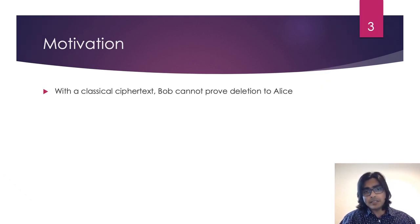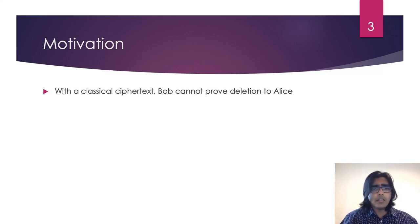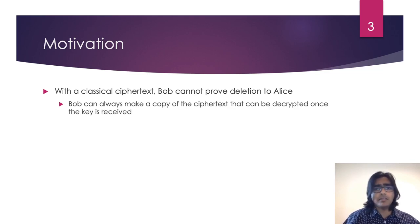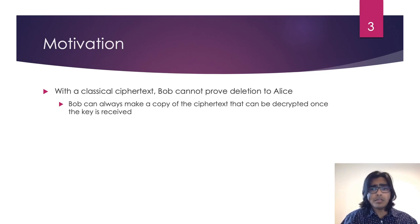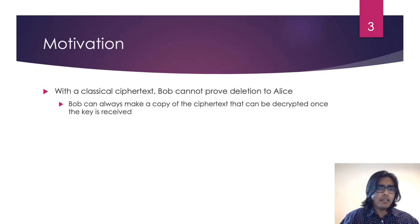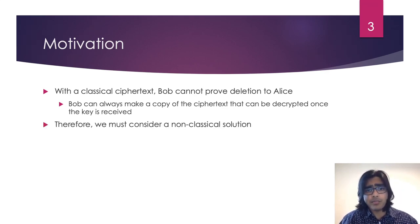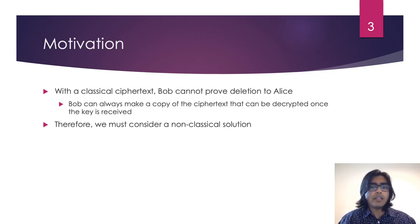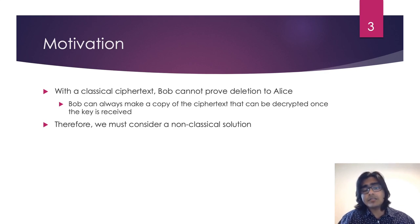Clearly, if the ciphertext consists only of classical information, this is impossible. Bob is always able to make a copy of the ciphertext. No matter what Bob does with the original to create some kind of proof, the copy of the ciphertext can always be decrypted once the key is received. Therefore, if we are to provide Bob with a way to perform certified deletion, we need to consider an alternative to a classical ciphertext.